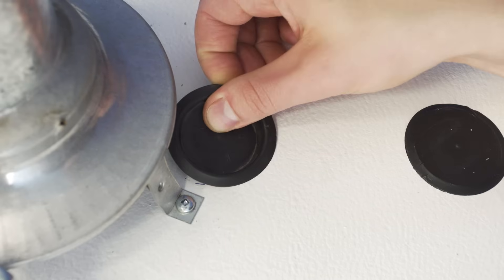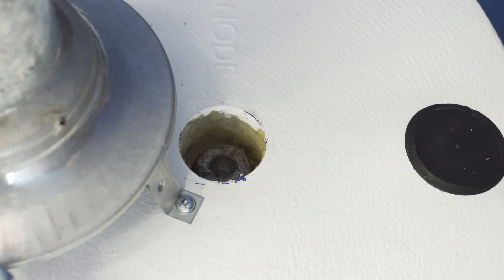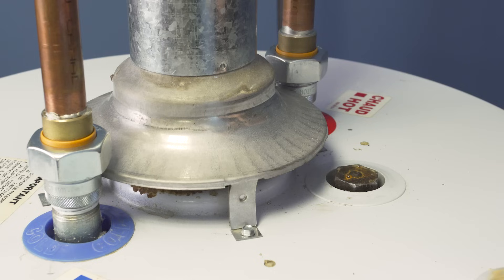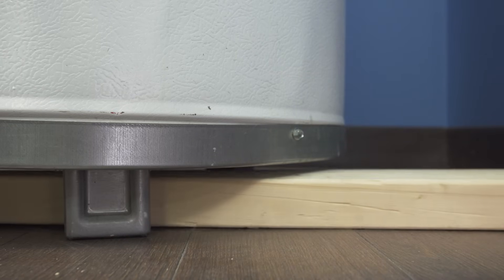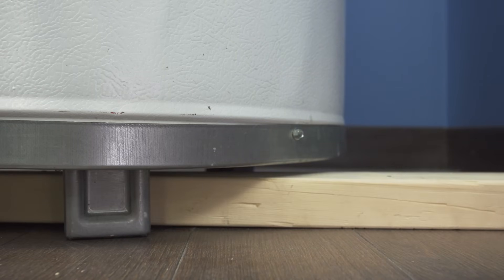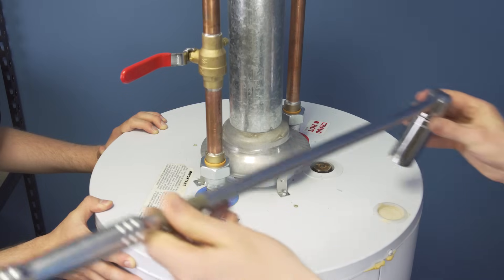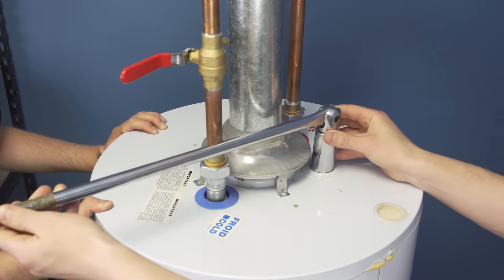The anode rod is sometimes under a plastic cover. If you haven't checked it in years, it might be stuck in place and will be difficult to remove. To prevent the tank from shifting, you can use a piece of wood to stabilize the tank. Alternatively, you can get another person to help support it.